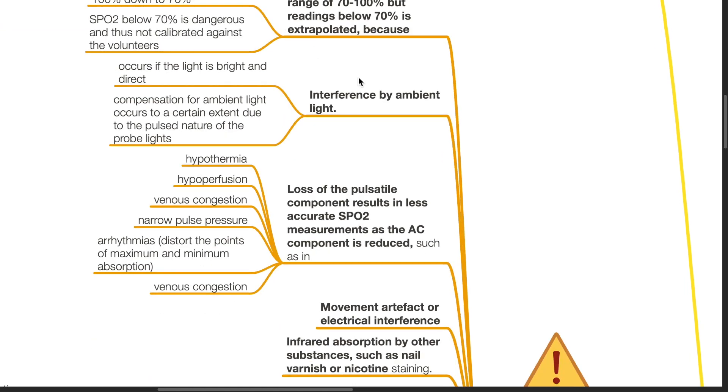Interference by ambient light occurs if the light is bright and direct, and compensation for ambient light occurs to a certain extent due to the pulsed nature of the probe light.